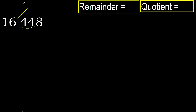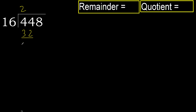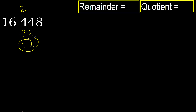16 multiplied by which number is nearest to 44 but not greater? 16 multiplied by 3 is 48 — 48 is greater. Multiply by 2: 32 is not greater. Subtract: 44 minus 32 is 12.